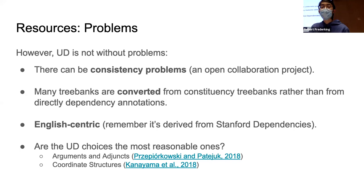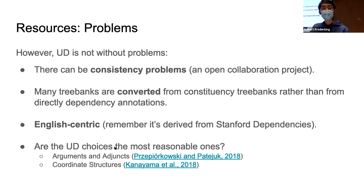UD is not without problems. It is an open collaboration from people around the world, and many treebanks are converted from previous constituency treebanks rather than directly annotated according to UD guidelines, which can cause information loss. One specific concern is that UD is English-centric, derived from Stanford Dependencies. There are ongoing discussions about whether certain UD choices are linguistically reasonable — for example, how to handle arguments versus adjuncts and coordination structures.